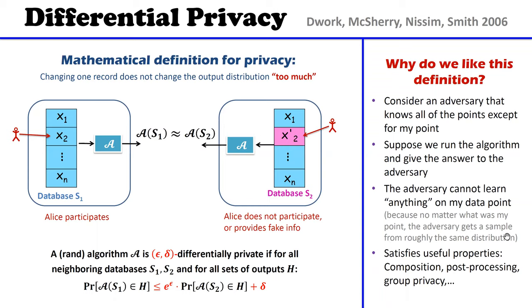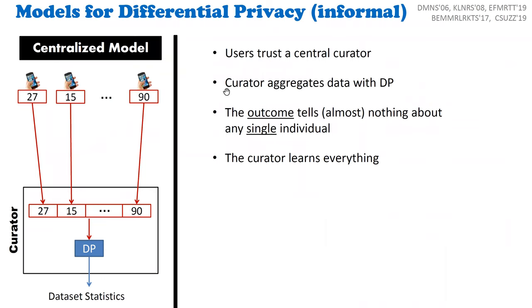This definition also satisfies several useful properties, which I won't get into now. What I'll show in this slide is different models using which we can apply differential privacy in different settings. The first is called the centralized model for differential privacy — the standard model. We have a collection of N individuals, each with their own private data, and each user gives their data as-is to a data curator. The data curator now has a database containing information from all these individuals.